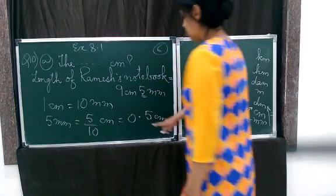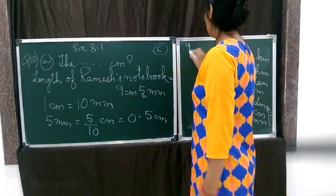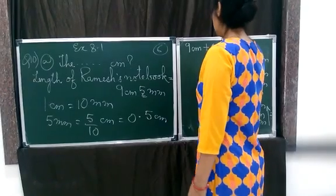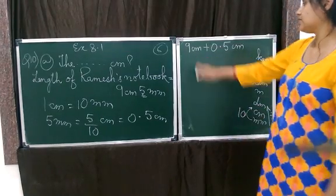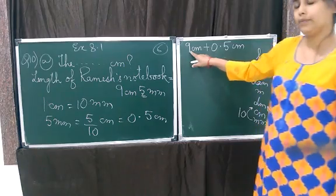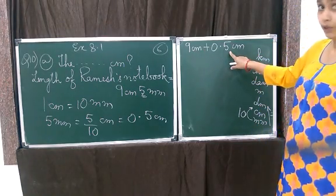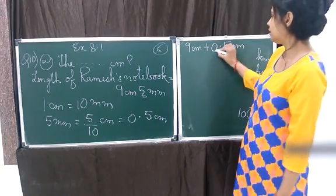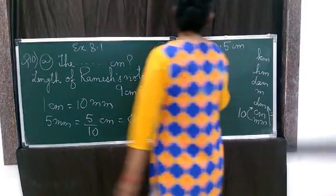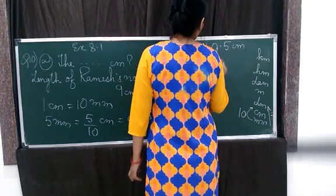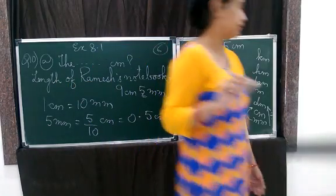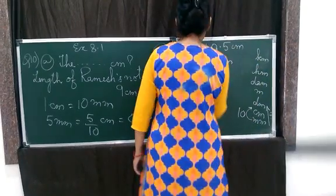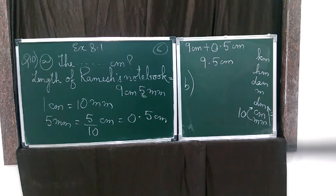Now, is this the answer? No. There is 9 centimeter also. So, we are going to add 9 centimeter plus 0.5 centimeter. This 9, as we already discussed, it's a whole number. So, will it be added to a decimal number? No. It will be added to a whole number. What is the whole number here? The whole number here is 0. So, 9 plus 0 will give us 9. Therefore, 9.5 centimeter is the length of Ramesh's notebook. This completes A.